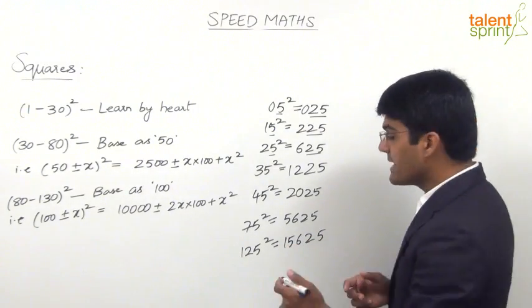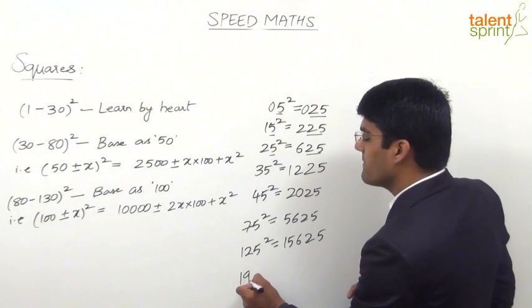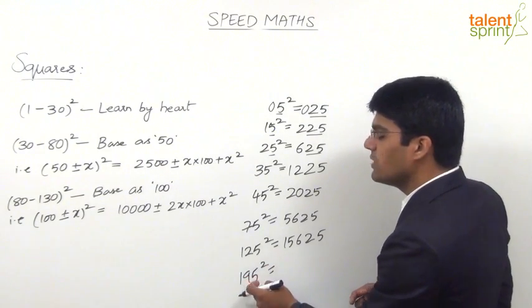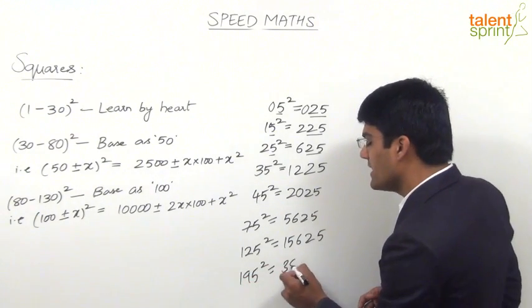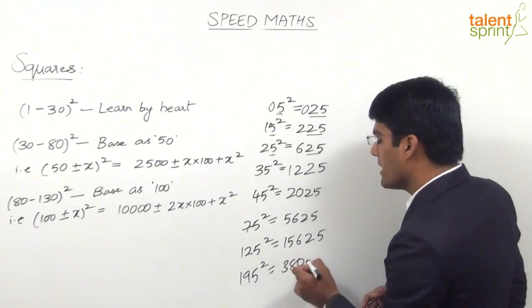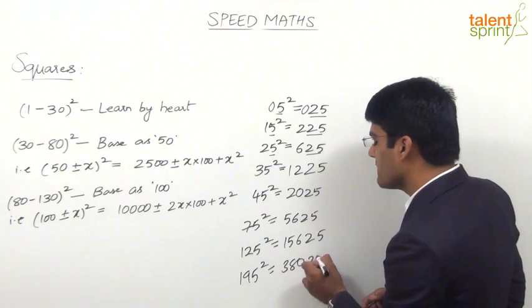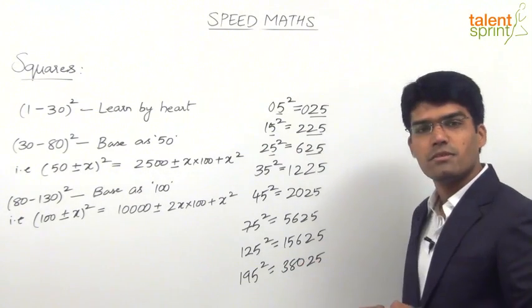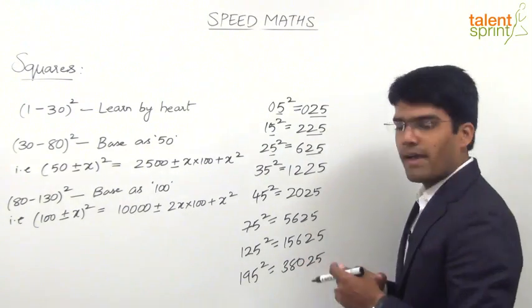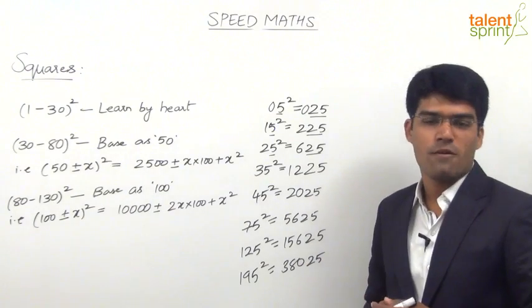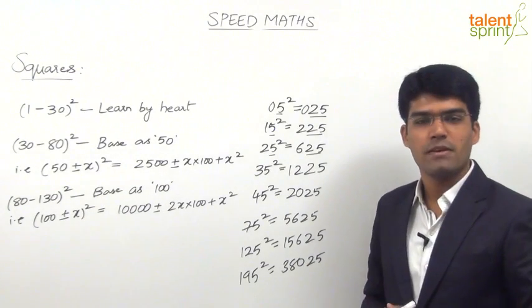Or let us say 195 squared: 19 into 20 is 380. And because the number ends in 5, the square ends with 25. So the answer is 38,025.